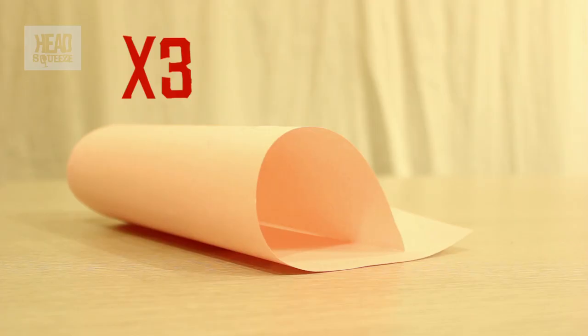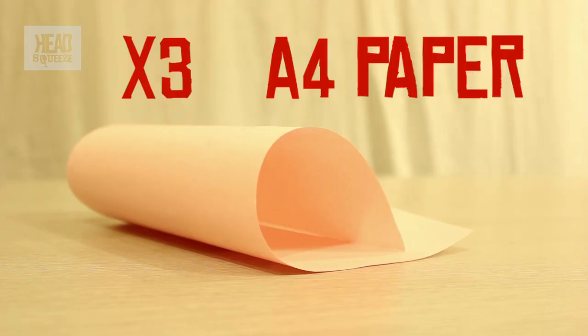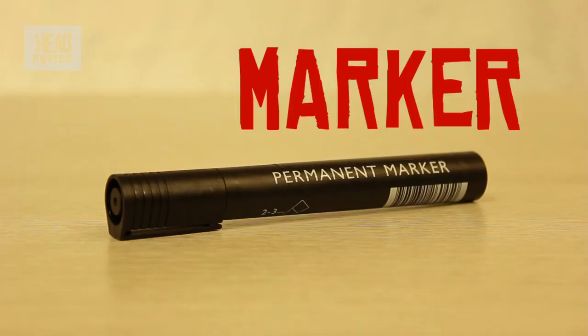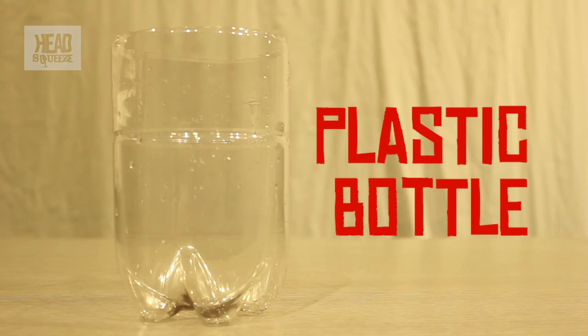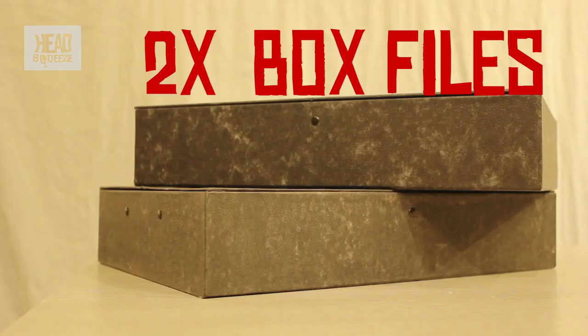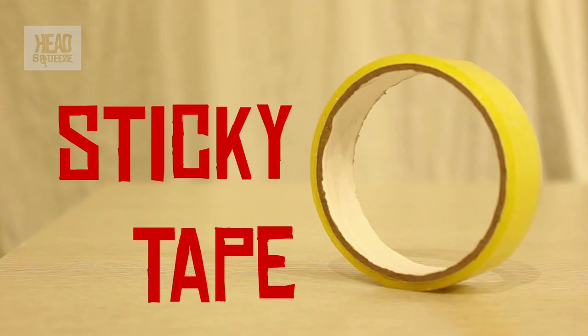For this experiment we're going to need three sheets of A4 sized paper, scissors, a marker, a measuring jug and some water, a plastic bottle, some string, two big books or box files and sticky tape.